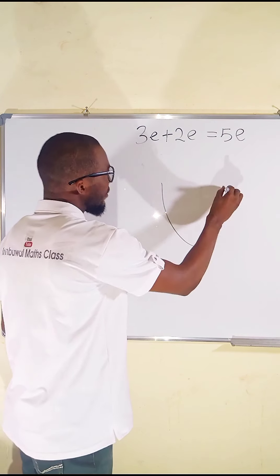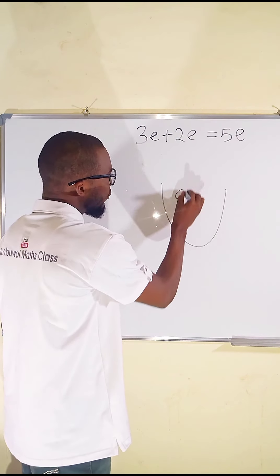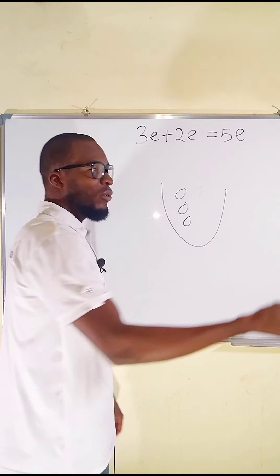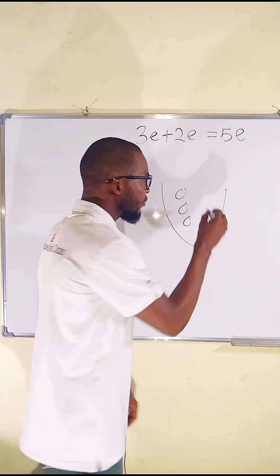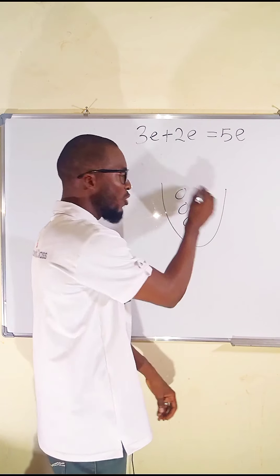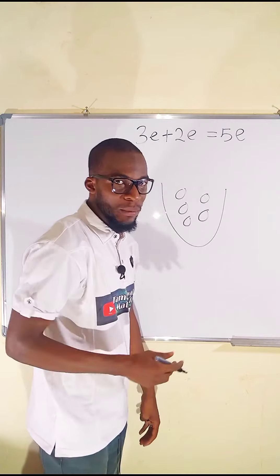Suppose you have a basket with 3x inside, and you add an extra 2 — you can see you have 5 of them.